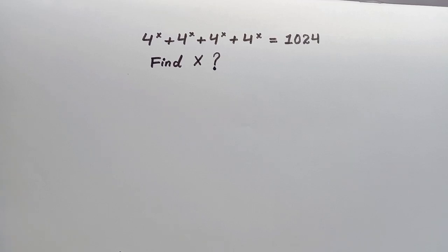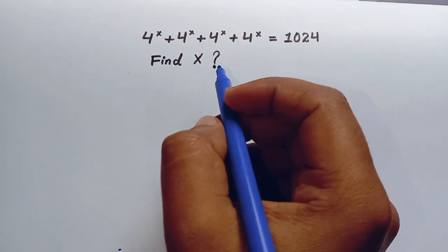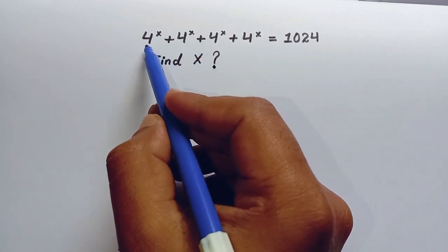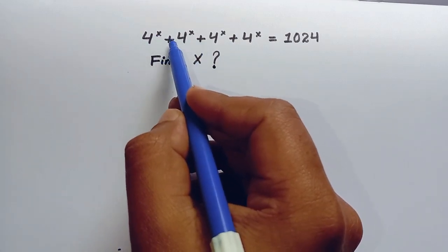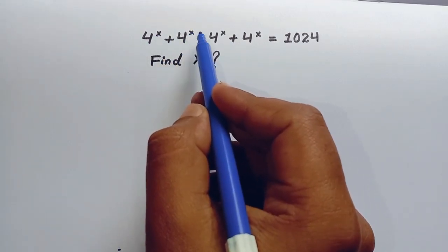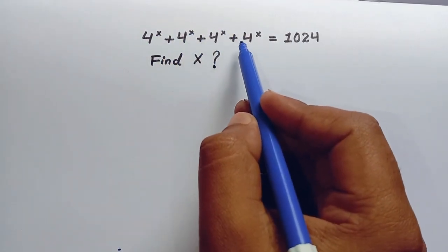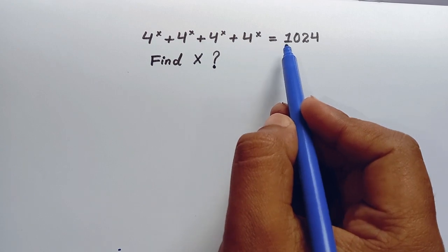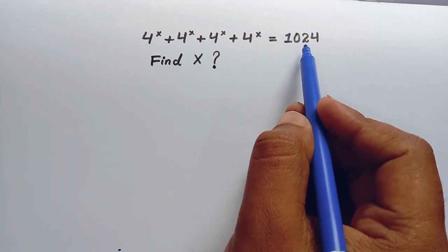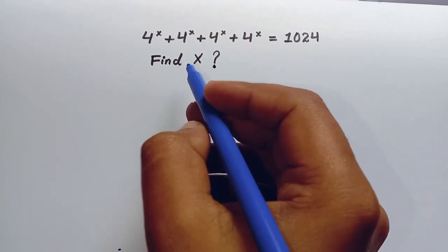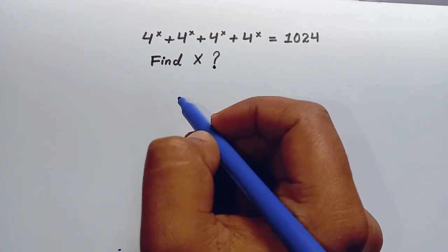Hi everyone, here we have an exponential equation given as 4 to the power x plus 4 to the power x plus 4 to the power x plus 4 to the power x equals 1024. So let us solve this.